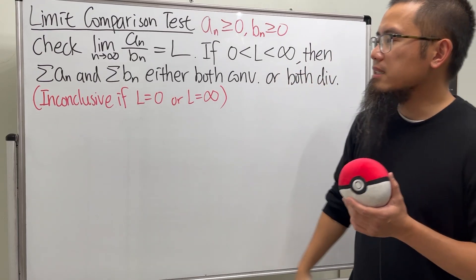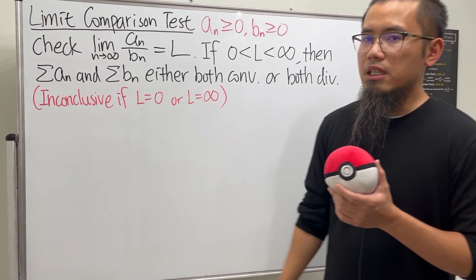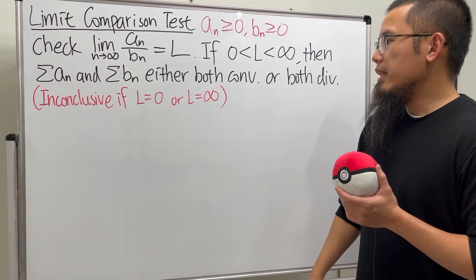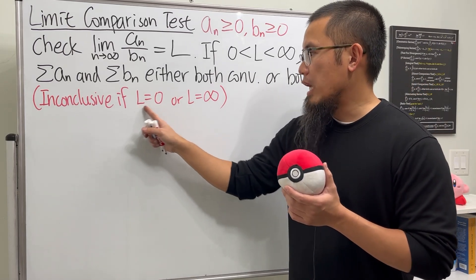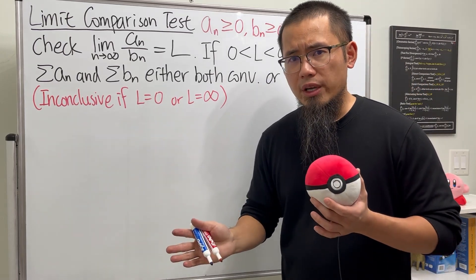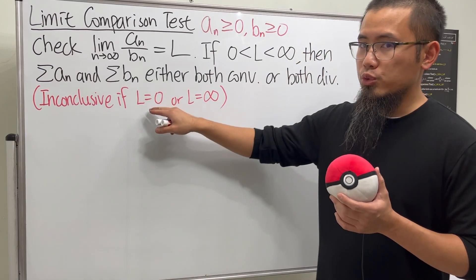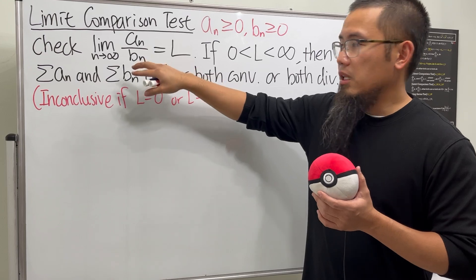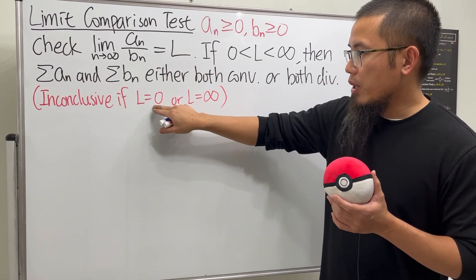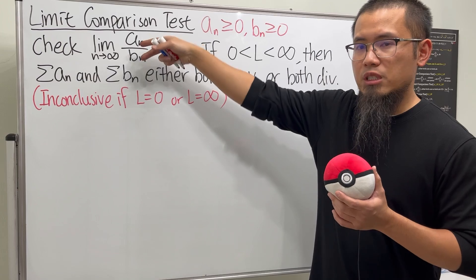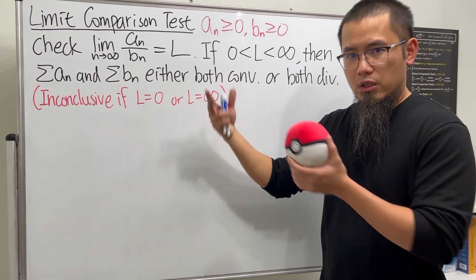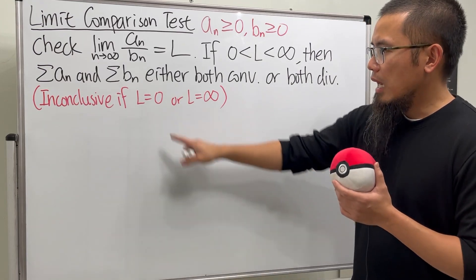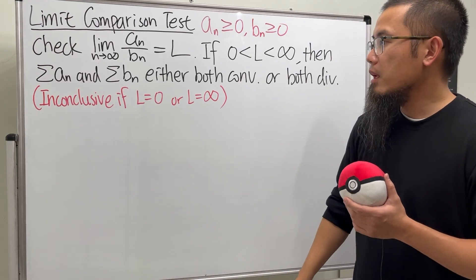The conclusion is that these two series either both converge or they both diverge. I'm going to demonstrate the case when L is equal to zero and why we cannot draw any conclusions. Note that if you switch bₙ and aₙ and end up with zero, taking the reciprocal gives you infinity — so these two cases are essentially the same thing. I'll just focus on the L equals zero case.